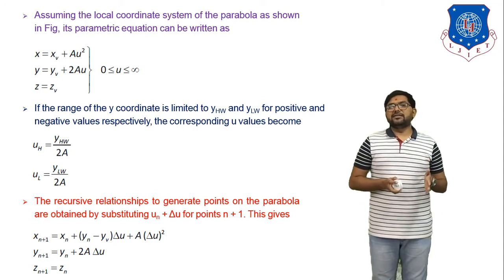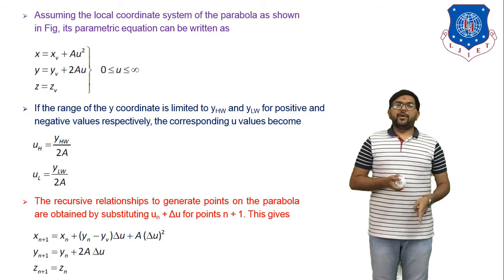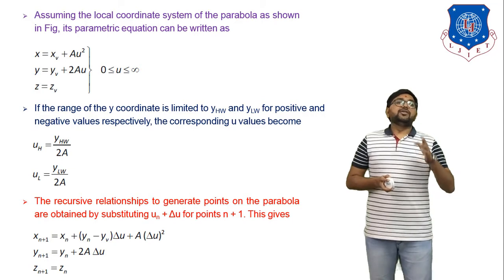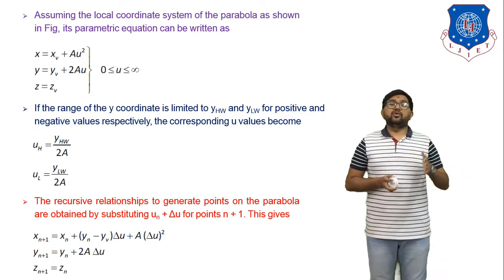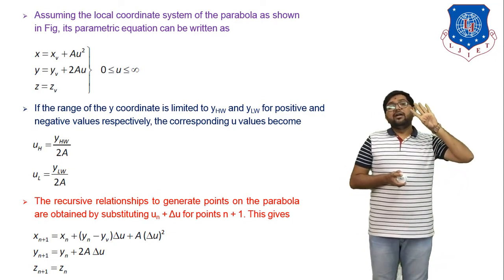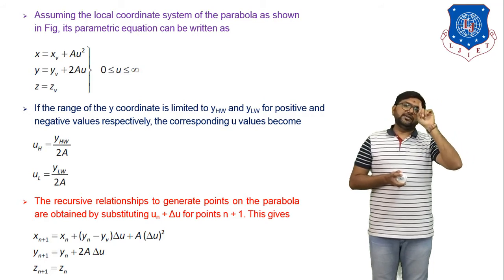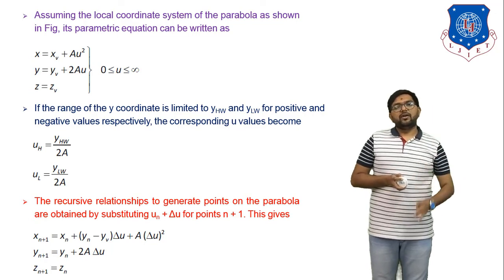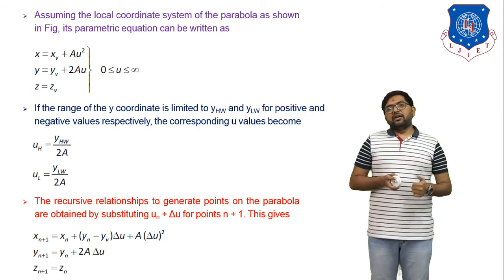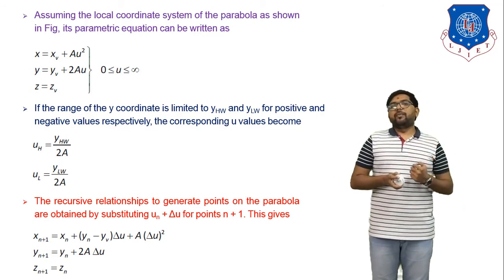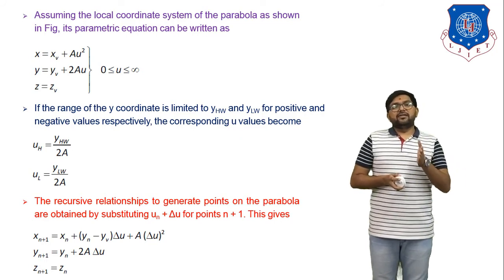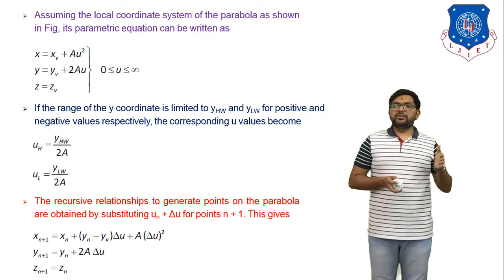In today's session we discussed two main topics: parametric representation of ellipse and parametric representation of parabola. In total we have derived four parametric equations: parametric equation of the line, parametric equation of the circle, parametric equation of the ellipse, and parametric equation of the parabola. In the next session we will discuss new topics of this chapter such as synthetic curves or analytical curves, and also bezier curves.